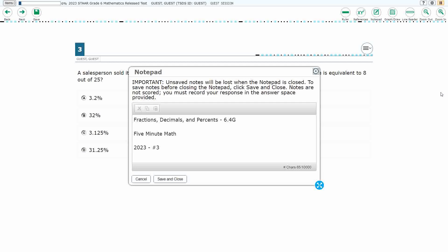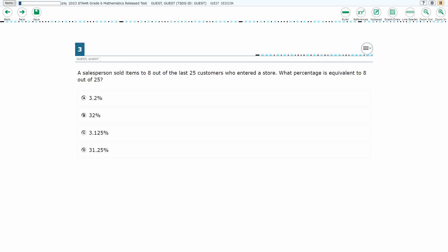Hello, and welcome to 5-Minute Math. Today we are looking at the 6th grade concept of fractions, decimals, and percents. This is standard 6.4g in the great state of Texas. We are using item number 3 of the 2023 released STAAR test. If you haven't done so already, please go ahead and take a moment to pause the video, work this problem out on your own, unpause it, and we will look at our answers together.